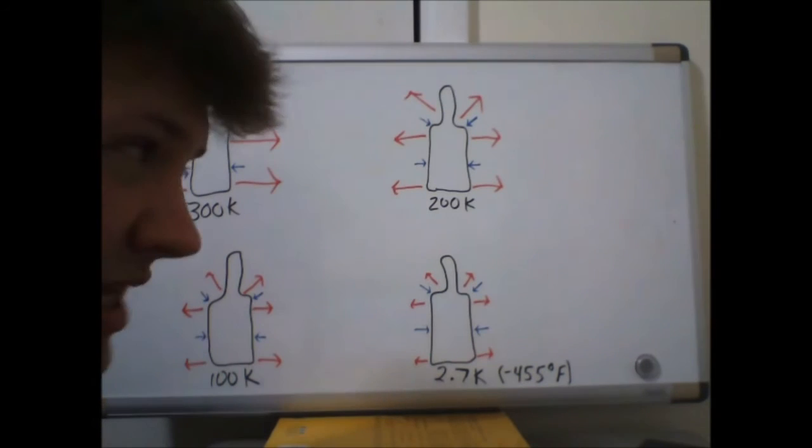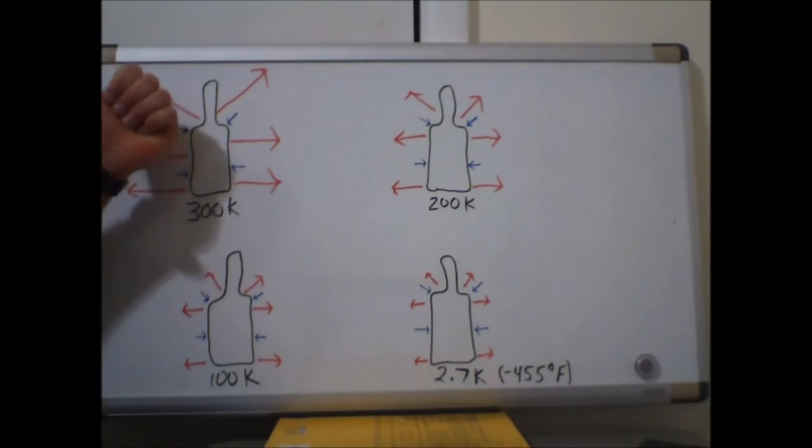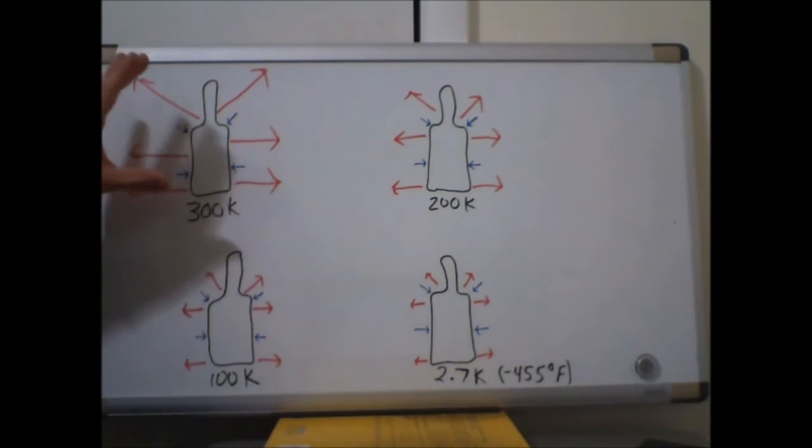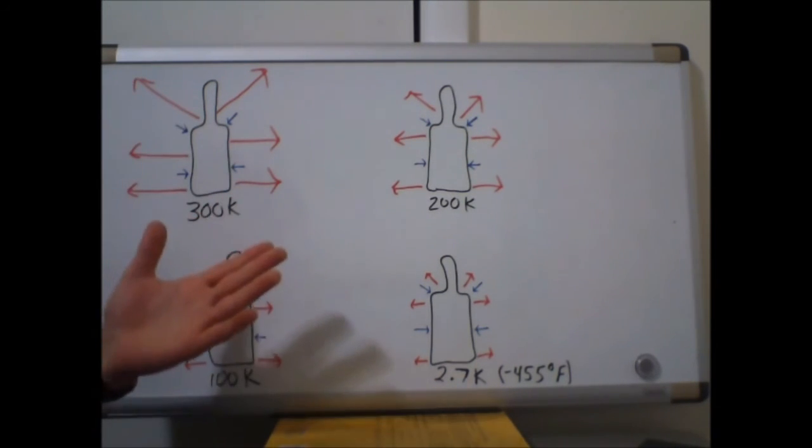But look at the lengths of these arrows. The energy that our beer bottle is emitting is a lot greater than the energy that it's absorbing. So our net effect is that our beer bottle is going to cool off because it's getting rid of more energy than it's taking in.